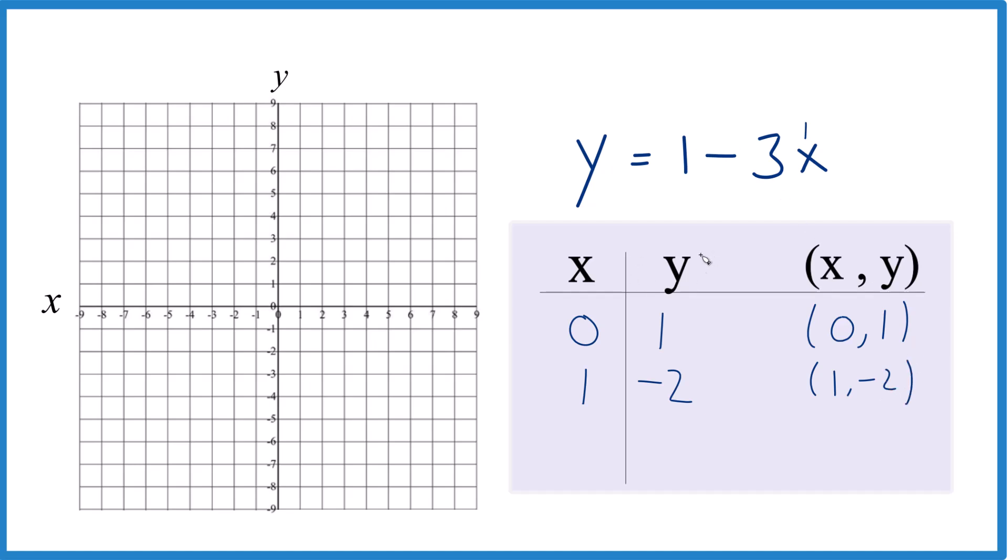And finally, let's put in 2. So 3 times 2 is 6, 1 minus 6 is negative 5. So we'd have 2, negative 5. And again, 0, 1, and 2, those are numbers I just made up because I thought the points would be on my graph paper here.